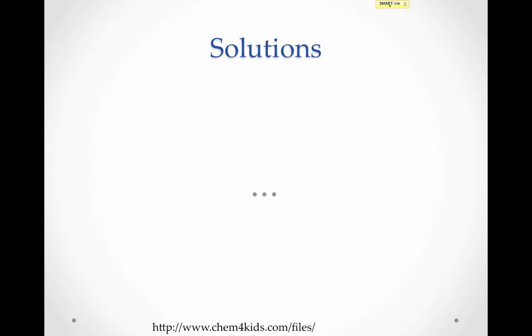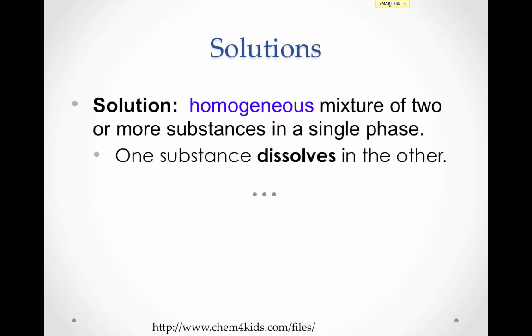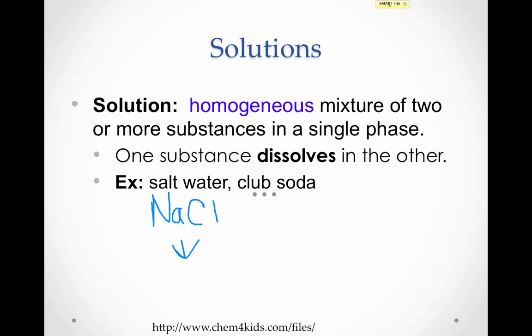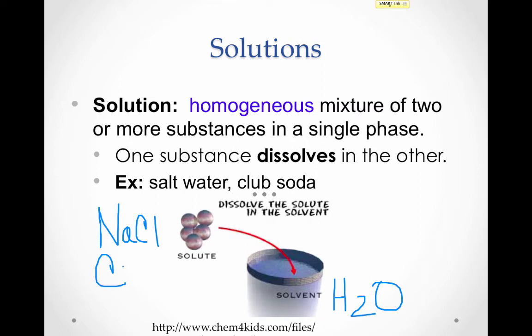We have a special name for certain homogeneous mixtures: a solution. A solution is a homogeneous mixture of two or more substances in a single phase — in other words, one substance has dissolved in the other. Salt water is a solution in which NaCl has dissolved in water. Club soda is a solution in which CO2 gas has dissolved in water. The substance that does the dissolving is called the solvent — in both examples, that's water. The solute is the thing that dissolves in the solvent — NaCl in salt water, or CO2 in club soda.